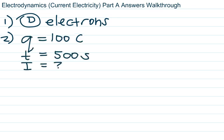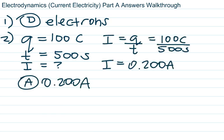In the second question, they give us the charge in Coulombs and the time as 500 seconds — charge is 100 Coulombs — and they want to know what is the current. I use the formula I equals Q over T. Q is 100 Coulombs, T is 500 seconds. 100 divided by 500 is 0.2, so our current is 0.2 amps. Choice A.